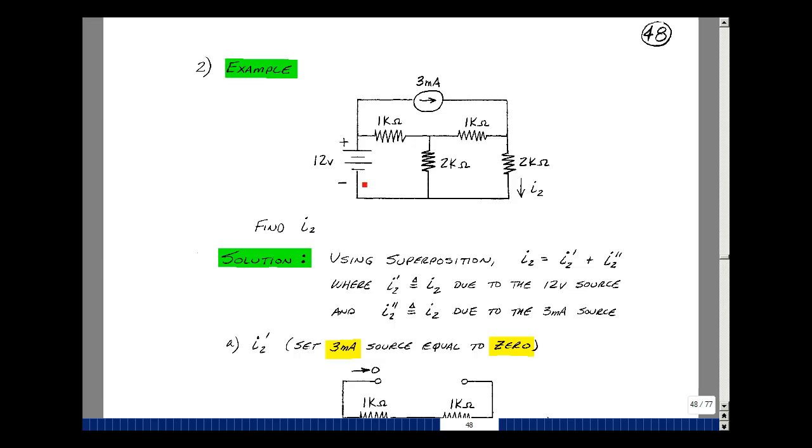Consider the following example, where I've got a voltage source and a current source. This was also the example we did in the mesh equation section, where we had a current source where we couldn't do a source transformation. Let's solve for the mesh current I2, which is the current flowing in the 2K resistor.